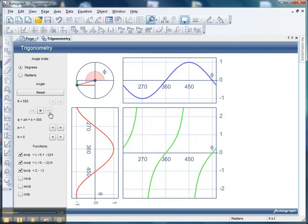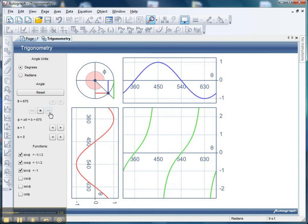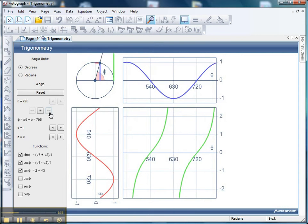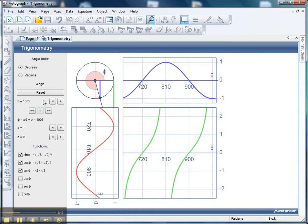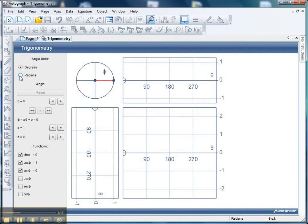That's very nice for showing where the three functions come from, but being Autograph we can do much more than that. If I just hit stop and reset, I can switch to radians as well and the axes change very nicely, but I'm just going to stick in degrees for now.